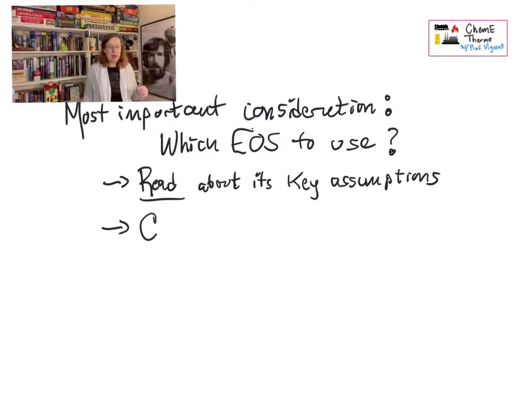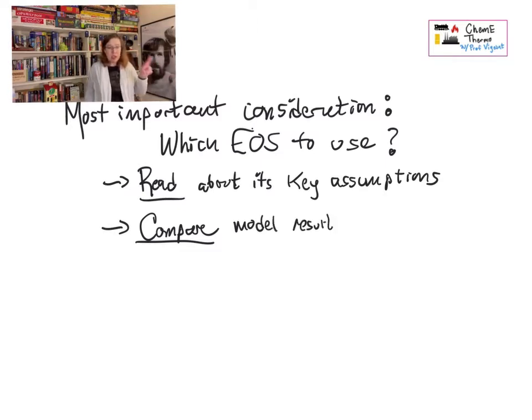So how do you do that selection? Well, one, you read about the assumptions that went into this particular equation of state, whatever it is, and you see, are they appropriate to your system? Two, you compare results to data. So you might not have complete data, but you probably have some. And does this equation of state capture that data when you compare? That's really good. You want that to happen.